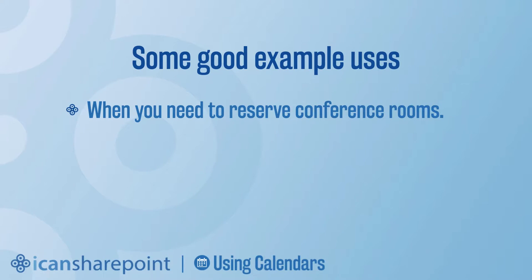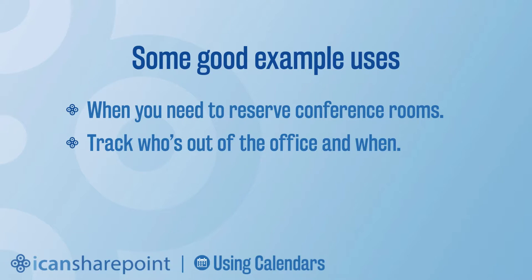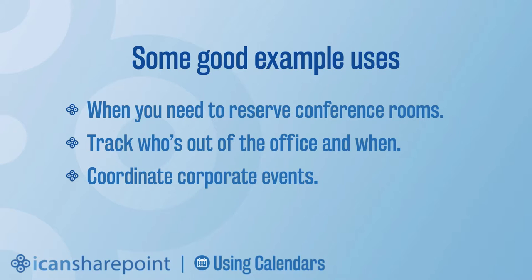Some good example uses: you can use this to reserve conference rooms, or really reserve anything — specific tools, vehicles, electronics, any item that people may want and there aren't many of. You can track who's out of the office and when, using it for tracking personal time off in a quick graphical sense. You can coordinate corporate events so there will be no conflicts because everybody knows where to go to check if something's happening. Ultimately, it comes down to no guessing — you're not running into the 'I'm not sure' situation, which is super critical.